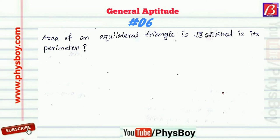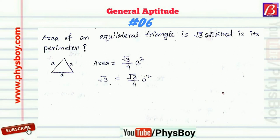The next question is: the area of an equilateral triangle is √3 cm². What is its perimeter? Let the side of the equilateral triangle be 'a'. The formula for the area of an equilateral triangle is (√3/4) × a². Using the given area, we can find the side 'a', which equals 2 centimeters. So the perimeter is 3 × 2 = 6 centimeters.